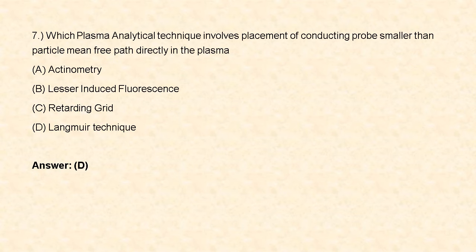Next question: which plasma analytical technique involves placement of a conducting probe smaller than the particle mean free path directly in the plasma? Option A: Actinometry. Option B: Laser-induced fluorescence. Option C: Retarding grid. Option D: Langmuir technique. The Langmuir technique is a plasma analytic technique which involves placement of a conducting probe smaller than the particle mean free path.